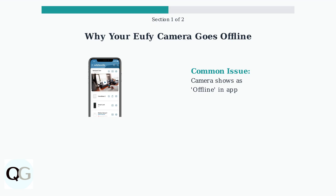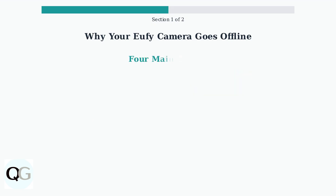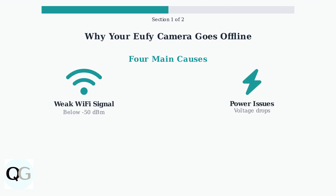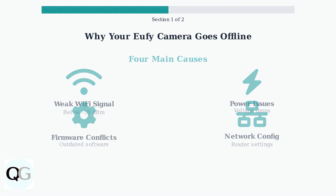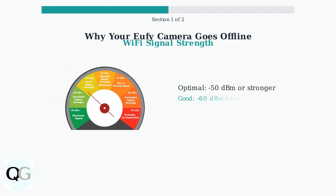There are four main reasons why your eufy camera goes offline: first, weak Wi-Fi signal strength; second, power supply problems; third, firmware conflicts; and fourth, network configuration issues.